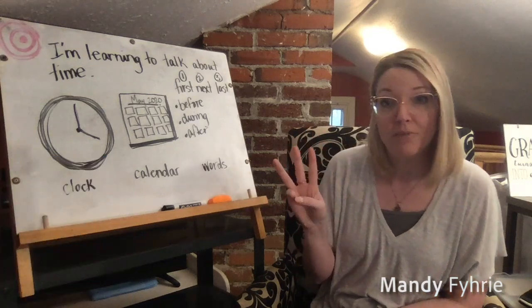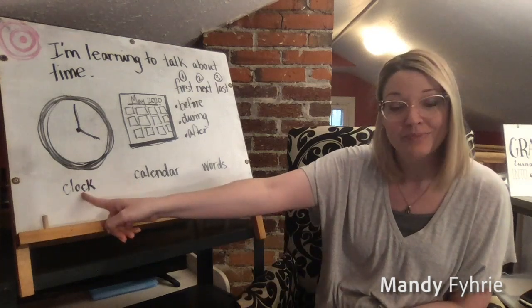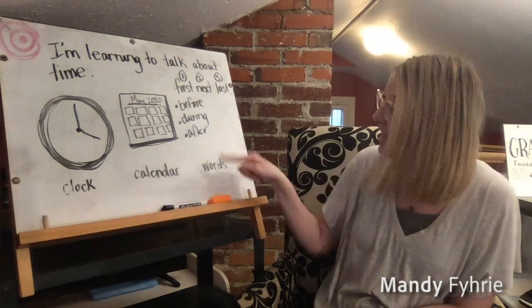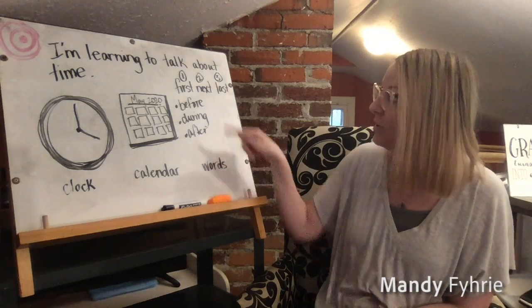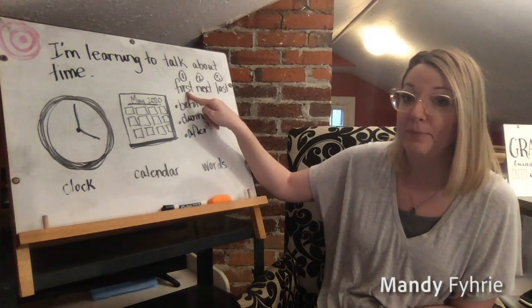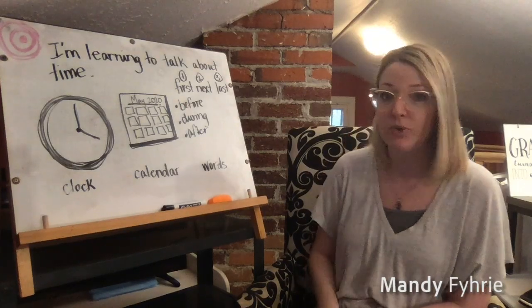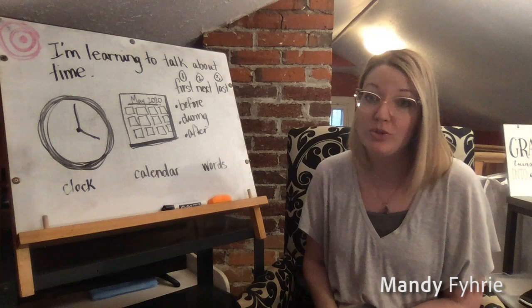The third way we can measure time is by using our words. The first way is by using a clock, the next way is to use a calendar, and the third way is to use our words. You use these words all the time in reading. When we retell or summarize a story, we might use the words first, next, and last. Other words we might use are before, during, and after.